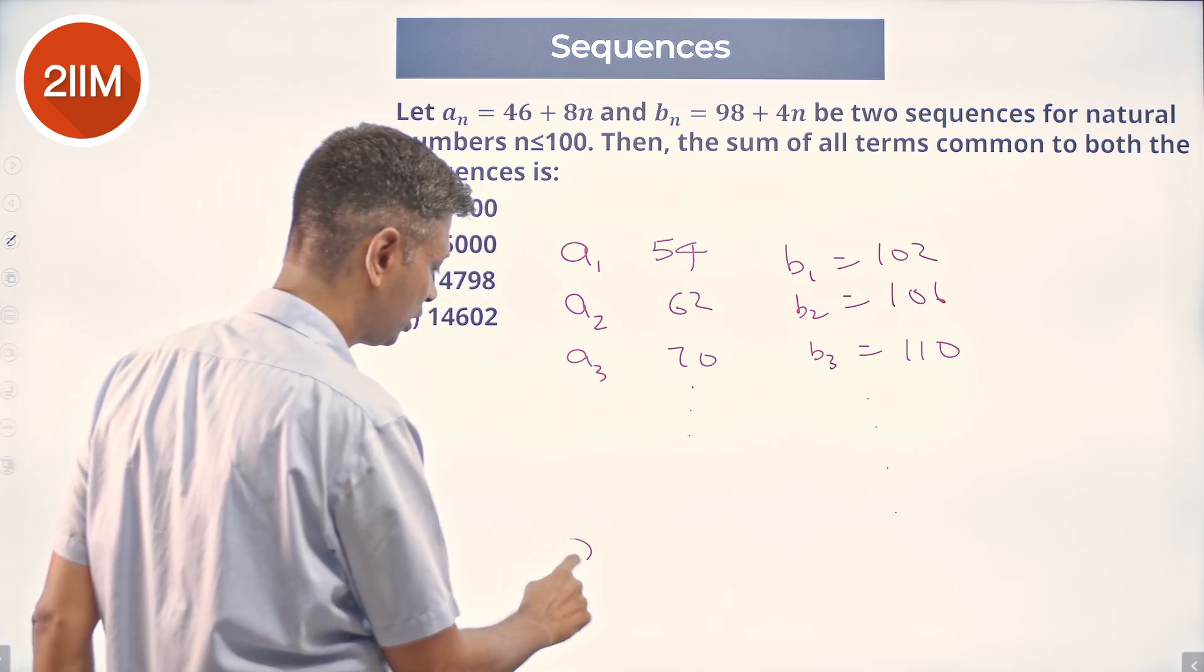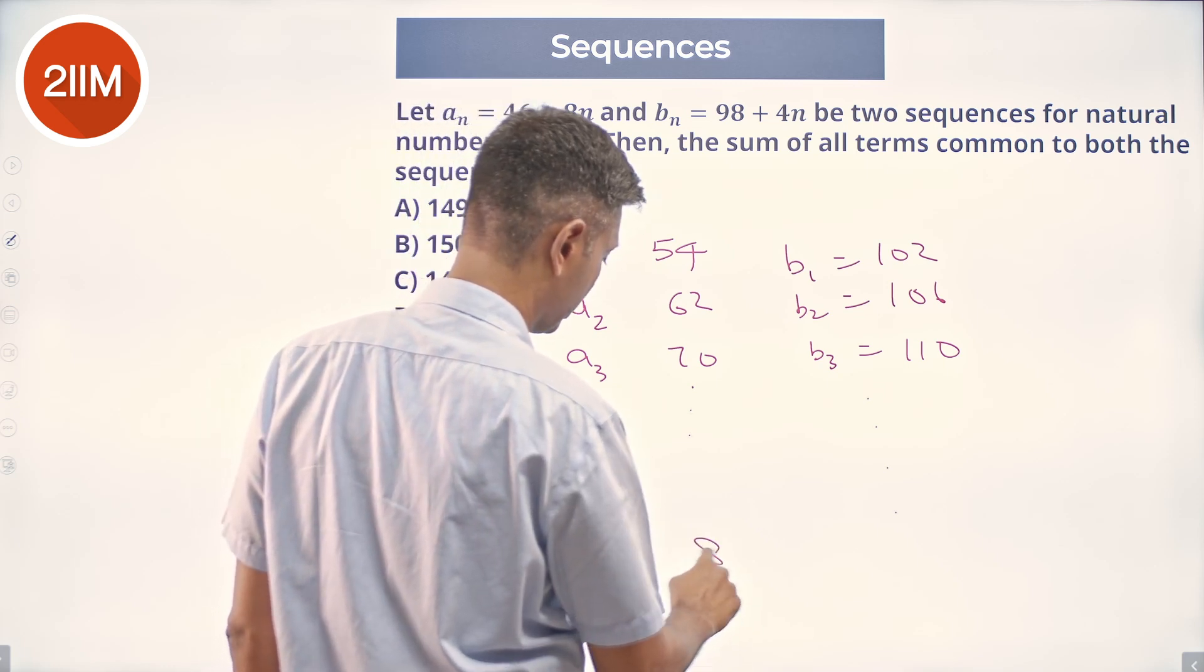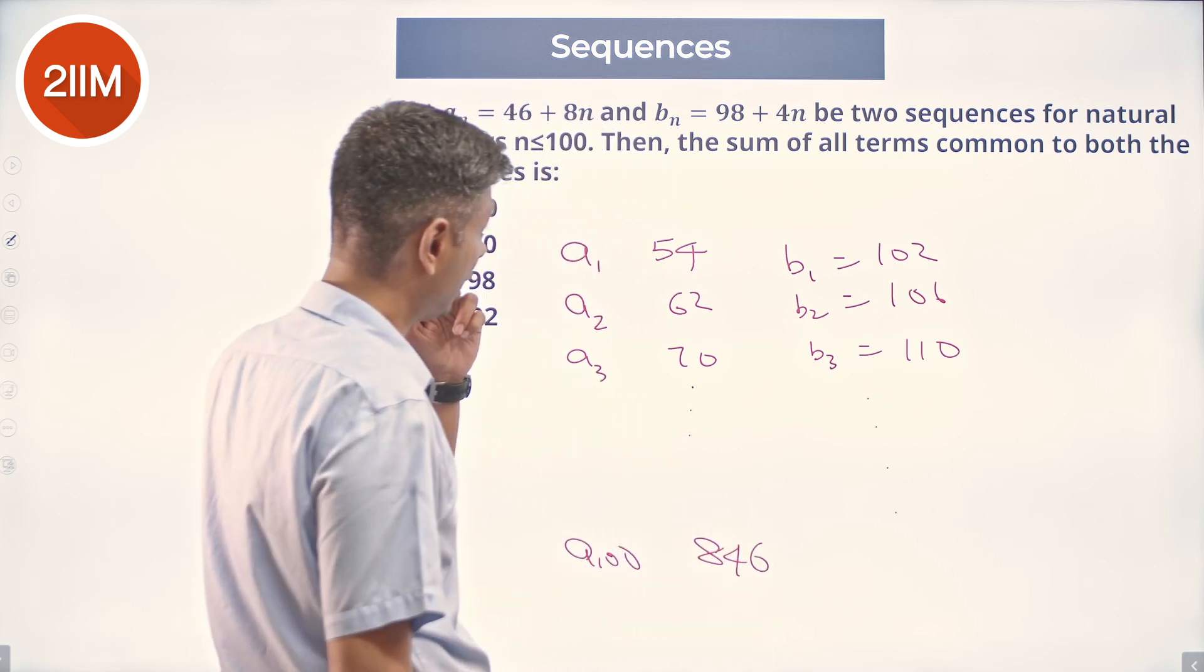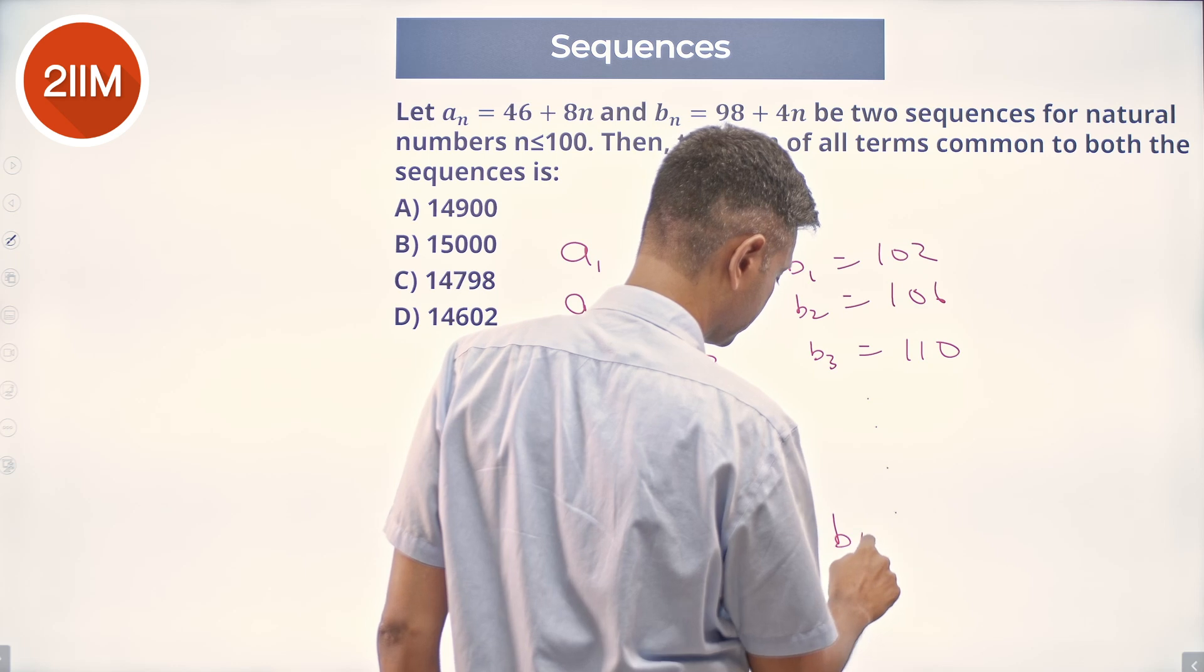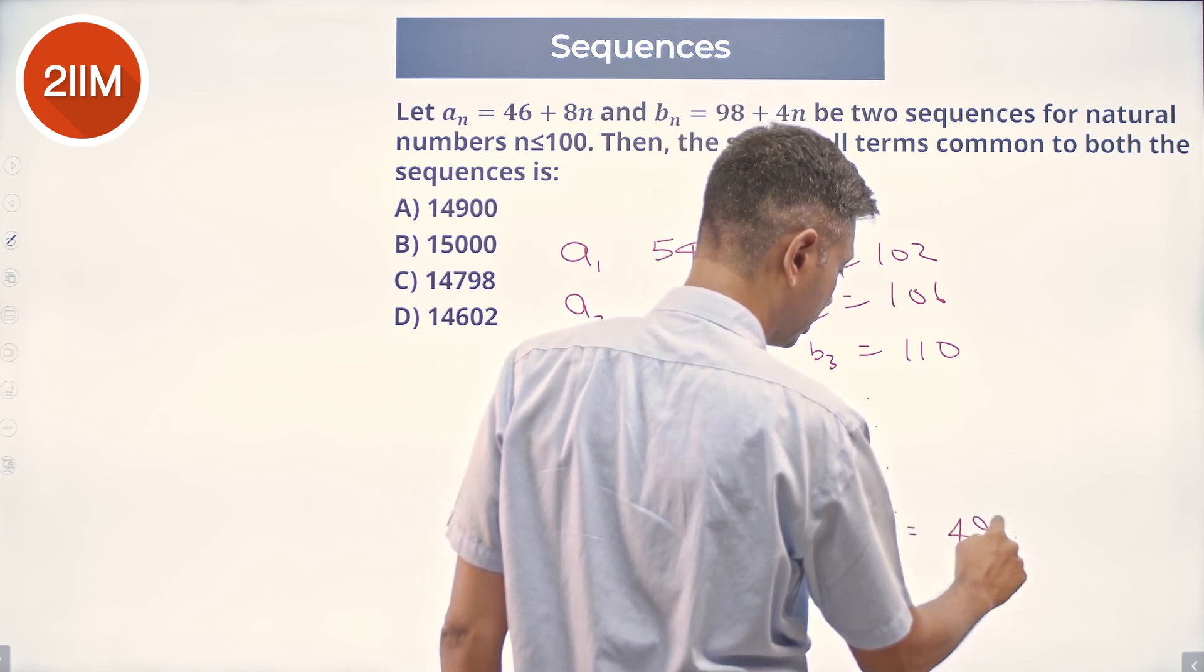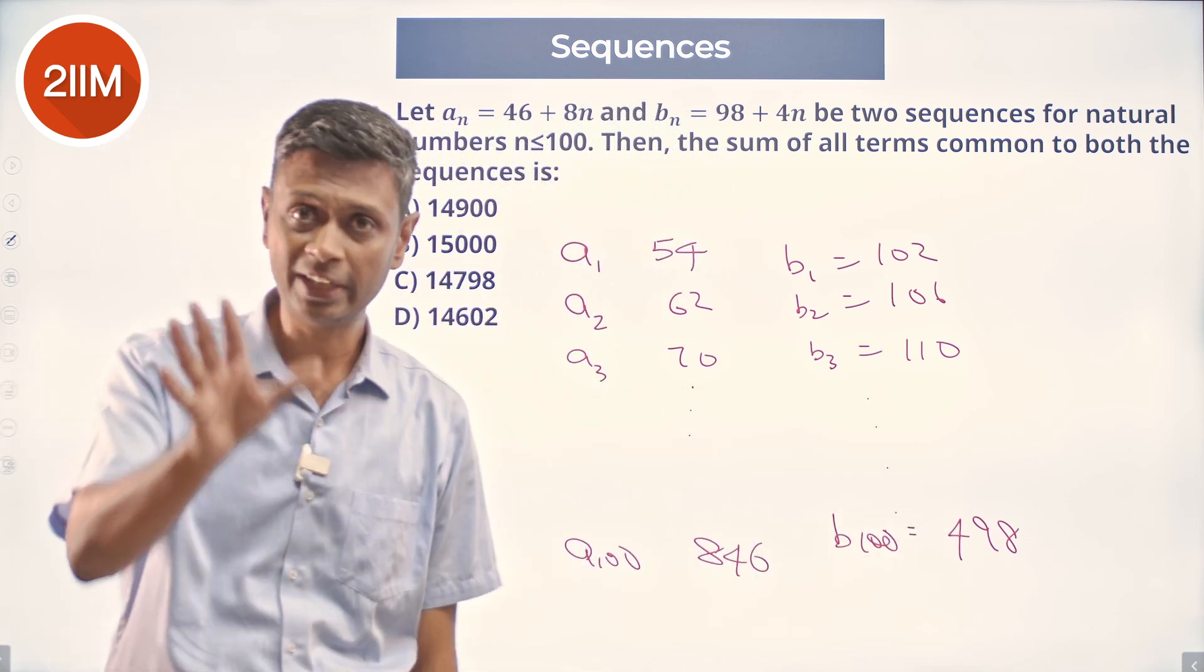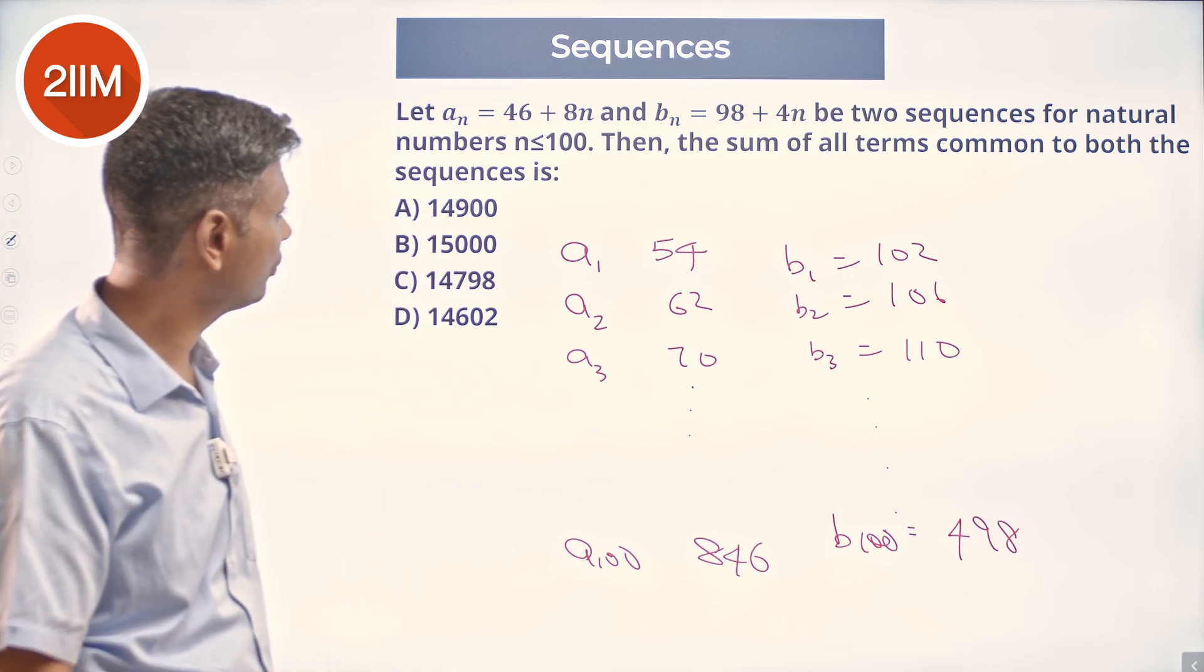n not equal to 100. The 100th term here is 46 plus 800, which is 846. The 100th term here is 400 plus 98, which is 498. So the common part will get cut off here. I won't go beyond 498.